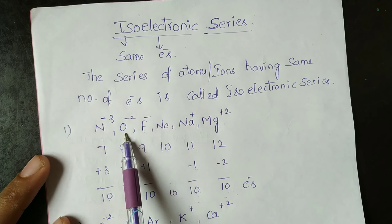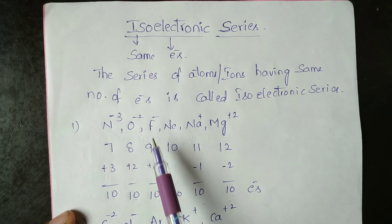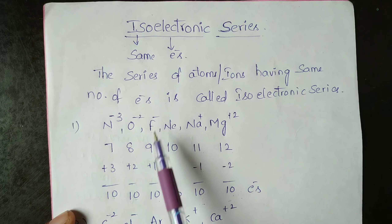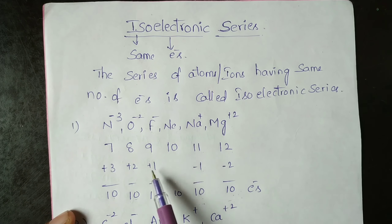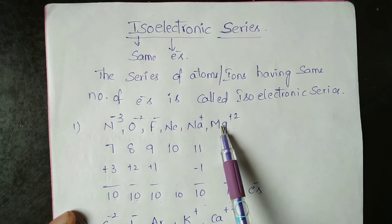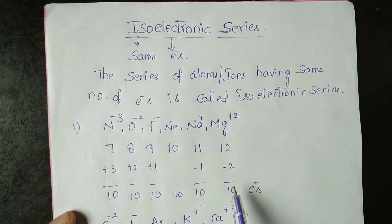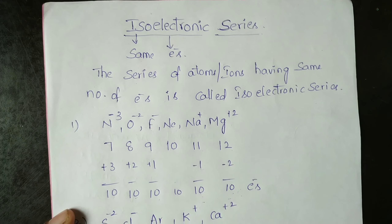Nitrogen has atomic number 7, oxygen 8, fluorine 9, neon 10, sodium 11, magnesium 12. N³⁻: the minus means gain of electrons. Nitrogen gains 3 electrons: 7 plus 3 equals 10. O²⁻: 8 plus 2 equals 10. Fluorine minus: 9 plus 1 equals 10.